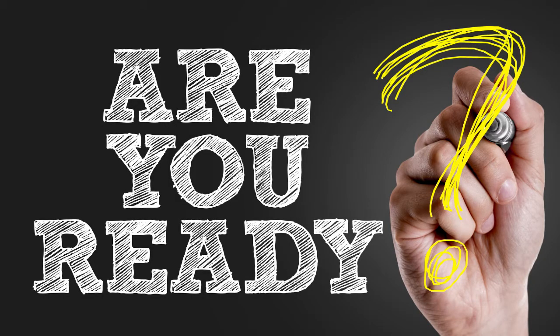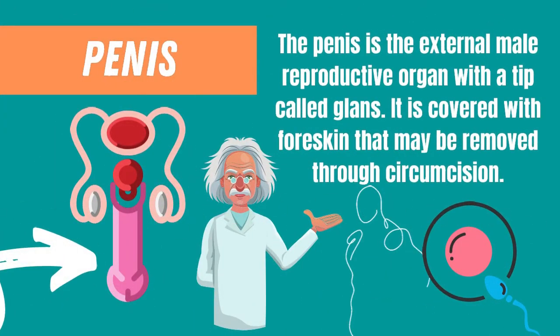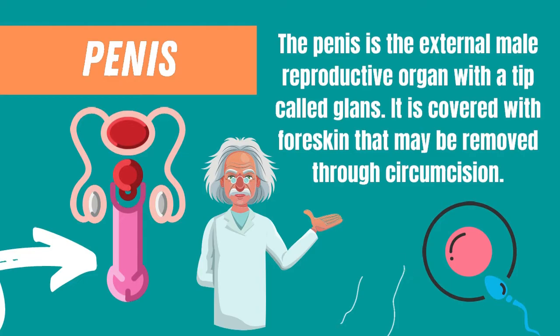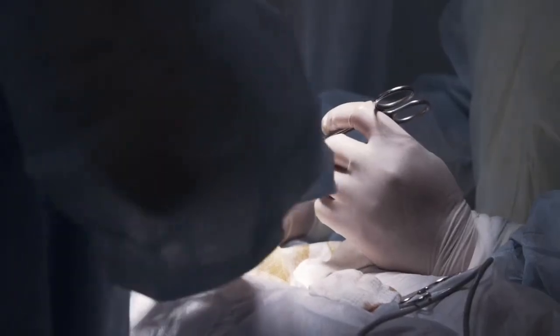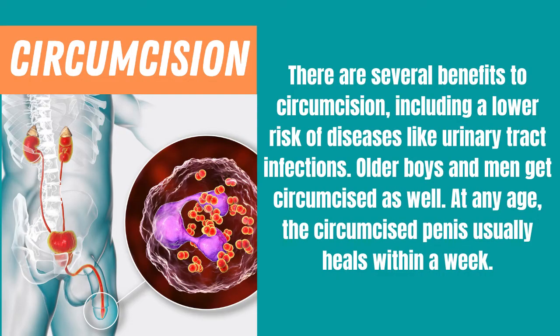Now let's start to talk about the parts of the male reproductive system, starting with the first one: the penis. The penis is the external male reproductive organ with a tip called the glans. It is covered with foreskin that may be removed through circumcision. Circumcision is the surgical removal of foreskin from a baby's penis. There are several benefits to circumcision, including a lower risk of diseases like urinary tract infections.